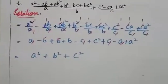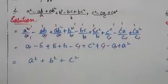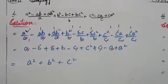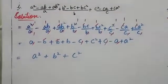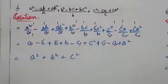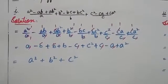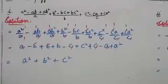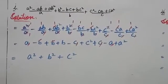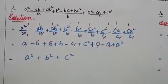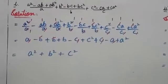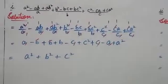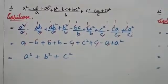First, you can see that you have a² by a. In the numerator, you have a with power 2, and in the denominator you have a with power 1.